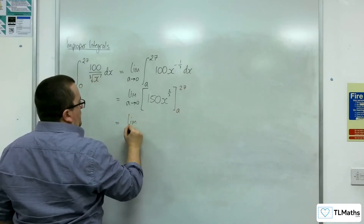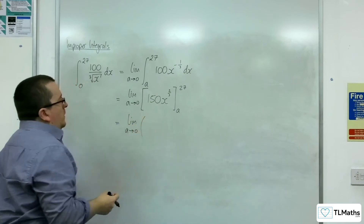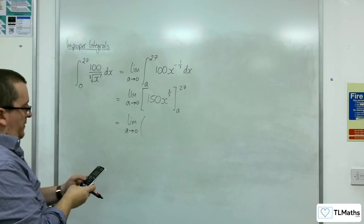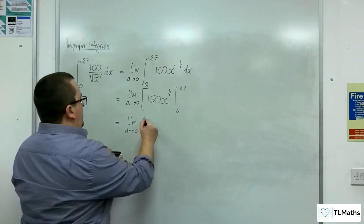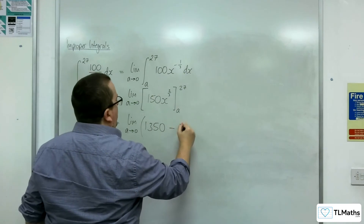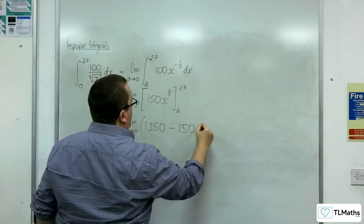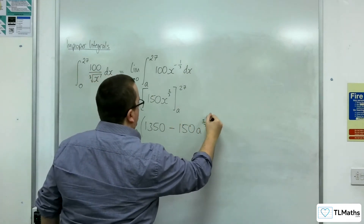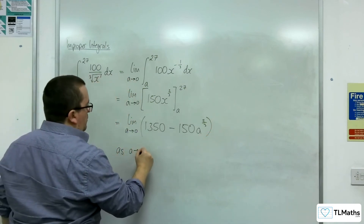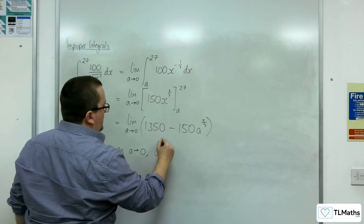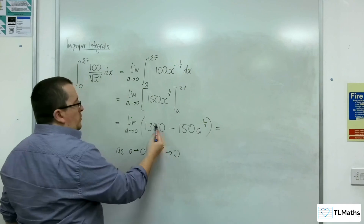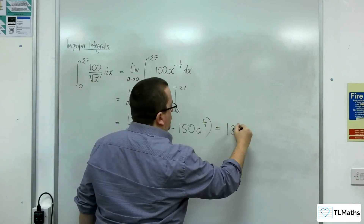So now we need to substitute in. We have 150 times 27 to the power of two thirds, and that gives us 1,350. Substituting in a, we get 150a to the two thirds. As a tends to 0, a to the two thirds will tend to 0, and so this will just tend to 1,350.